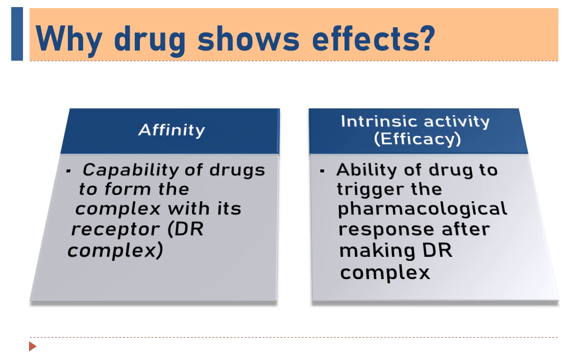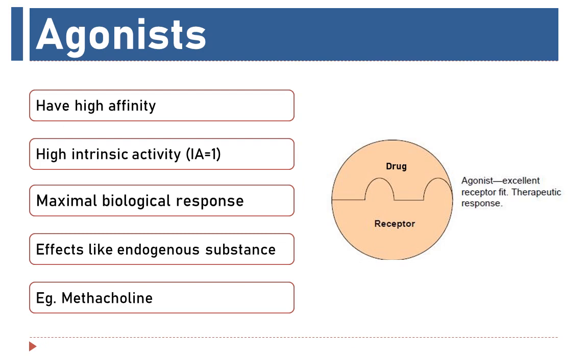On the basis of affinity and efficacy, drugs can be broadly classified as agonist and antagonist. Agonists have both high affinity as well as high intrinsic activity and therefore can trigger the maximal biological response or mimic the effects of the endogenous substance after combining with the receptor. For example, methacholine is a cholinomimetic drug, an agonist which mimics the effect of acetylcholine on cholinergic receptors. From this, we can say that a drug which combines with all sites on the receptors with excellent receptor fit is able to produce a therapeutic response.